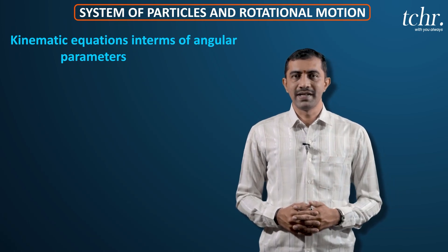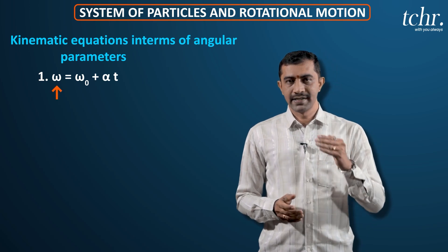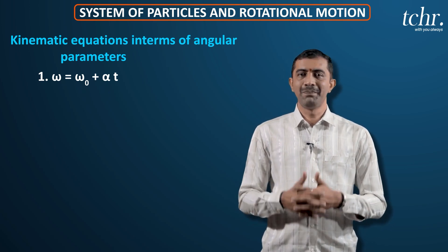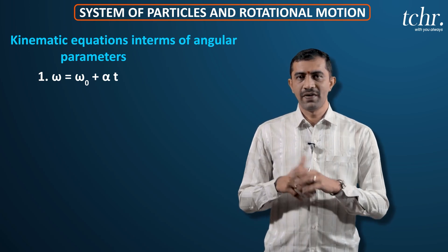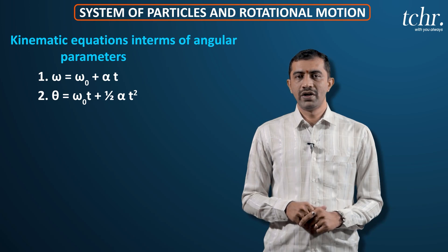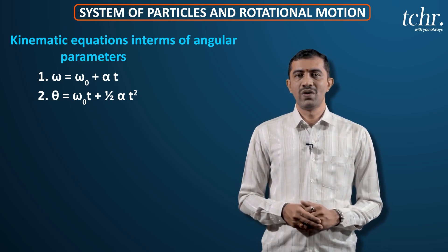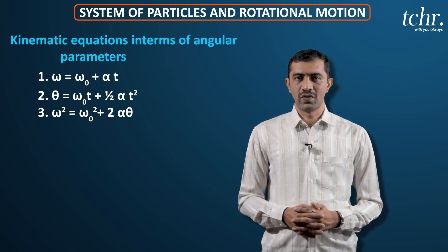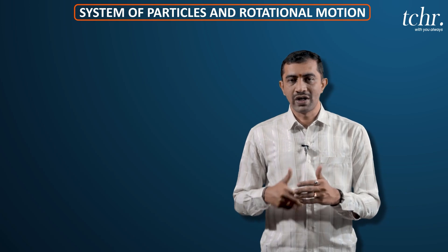Similar to the kinematic equations of motion, here also we have kinematic equations in terms of angular parameters. First equation, V equal to U plus At. In terms of angular, I have omega equal to omega naught plus alpha t. Omega is the final angular velocity. Omega naught initial value of angular velocity. And alpha is the angular acceleration which is happening in an interval of time t. Second equation, S equal to Ut plus half At square. In terms of angular, I can write it as theta equal to omega naught t plus half alpha t square, where theta is the angular displacement. Coming to the third equation, time independent equation, V square equal to U square plus 2As. In angular quantity, it is given by omega square equal to omega naught square plus 2 alpha theta.